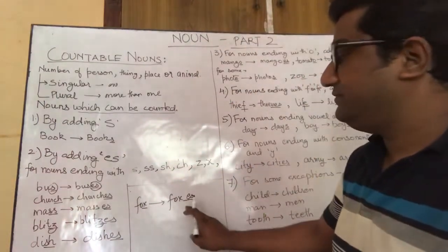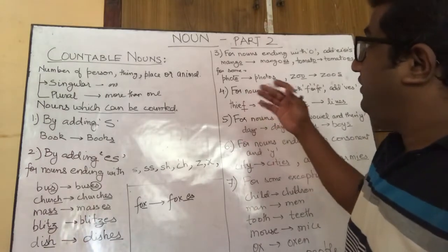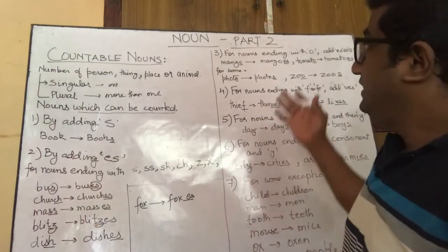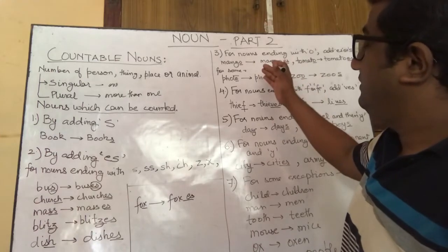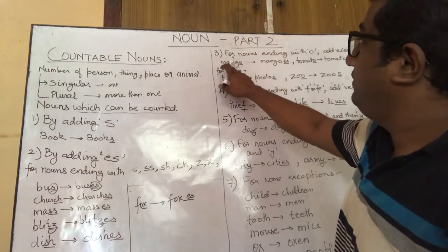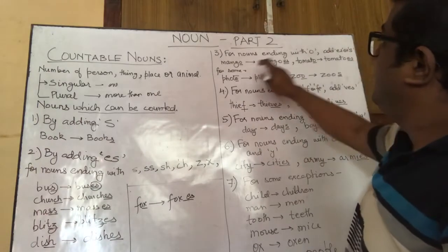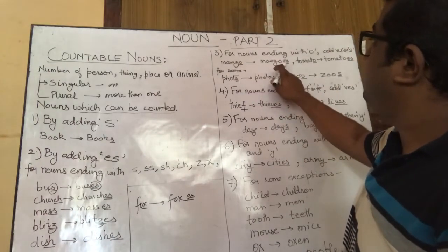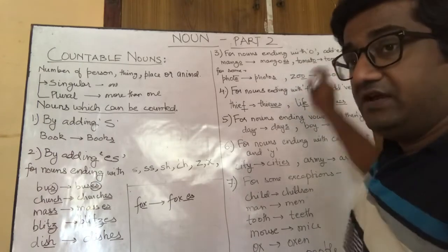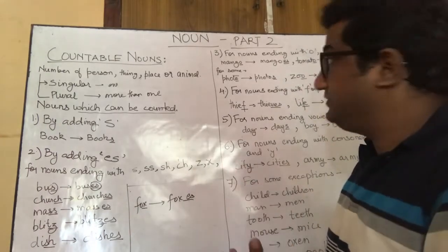For some nouns which end with O, we add ES. For example, mango becomes mangoes, tomato becomes tomatoes, and similarly potato becomes potatoes.